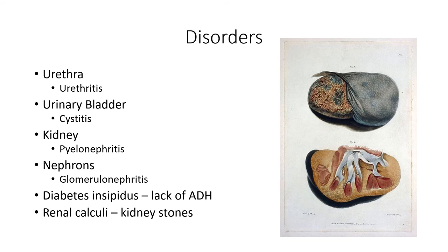Nephrons can become inflamed as well — we call that glomerulonephritis, now referred to as acute nephritis or chronic nephritis. In the 1800s it was called Bright's disease, detected by having excess levels of albumin in the bloodstream. Albumin is a common blood protein important for blood osmotic pressure.